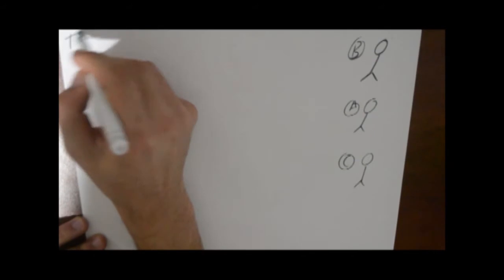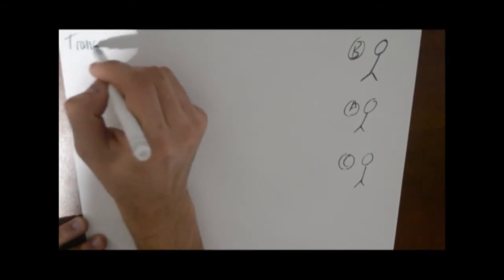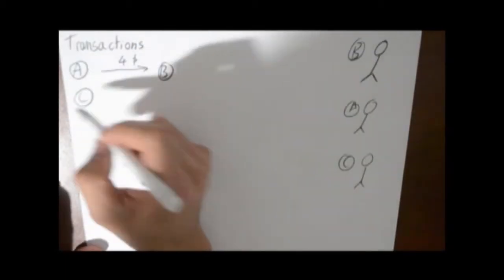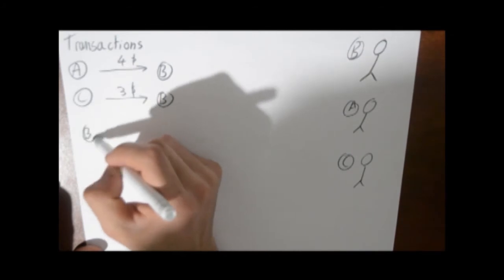Right now, let's say you're exchanging money with your friends, but you're too lazy to always carry money with you. So, you and your friends set up a list of transactions. A gives money to B, C gives to B, B gives to A, etc.